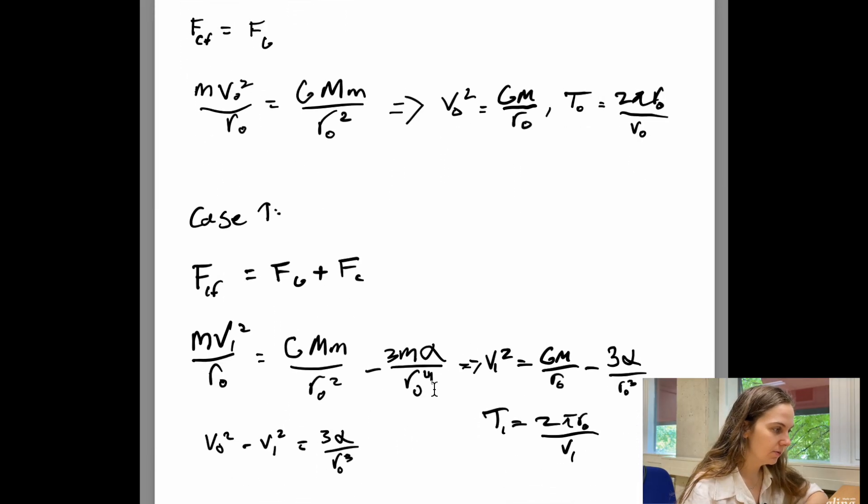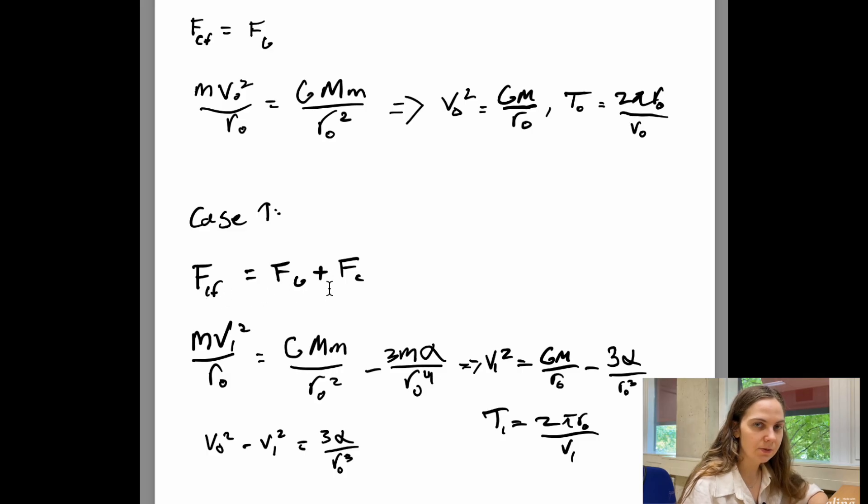So if we now balance the forces in the other case, we have that the centrifugal force should balance the gravitational force plus this additional force Fc. So we get the expression that v1 squared is just G times capital M over r0 minus 3 alpha over r0 squared. And just like in the previous case, we can write the period t1 in terms of the speed v1. And if we now take the difference between these two speeds squared v0 squared minus v1 squared, we get that this is just 3 alpha over r0 to the power of 3.